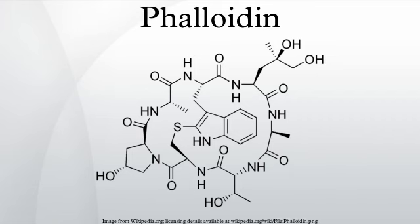Discovery and background: Phalloidin was one of the first cyclic peptides to be discovered. It was isolated from the death cap mushroom and crystallized by Theodor Wieland and Ulrich Wieland in 1937. Its structure is unusual in that it contains a cysteine-tryptophan linkage to form a bicyclic heptapeptide. This linkage had not been characterized before, making the structure elucidation of phalloidin significantly more difficult.